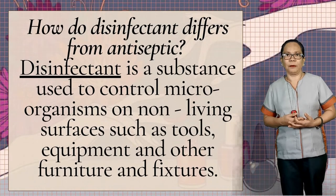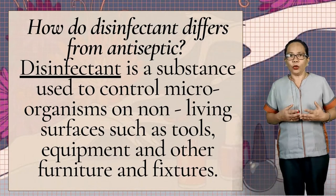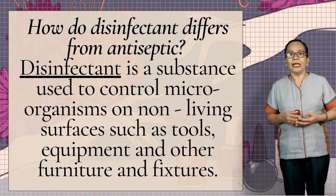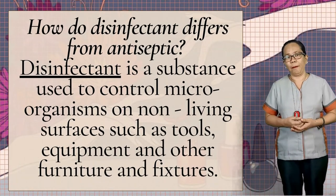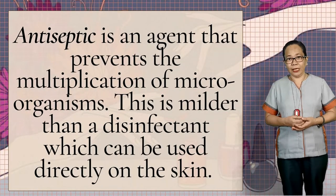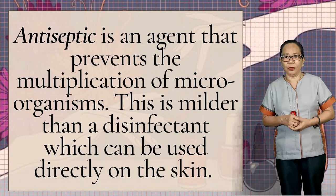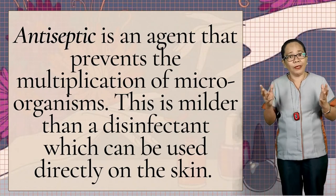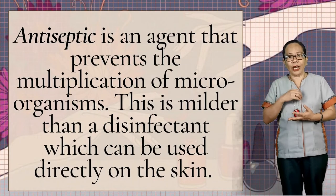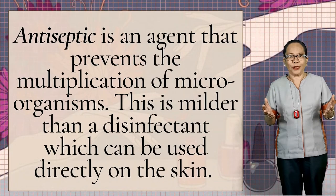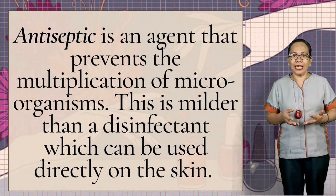How does a disinfectant differ from an antiseptic? A disinfectant is a substance used to control microorganisms on non-living surfaces such as tools, equipment, and other furniture and fixtures. An antiseptic is an agent that prevents the multiplication of microorganisms. It is milder than a disinfectant and can be used directly on the skin. A common example of an antiseptic we use nowadays is alcohol — alcohol is considered an antiseptic because it is milder than a disinfectant.